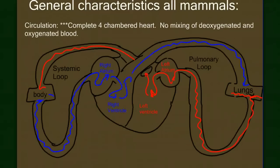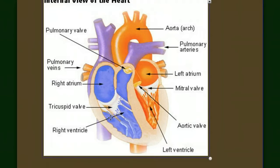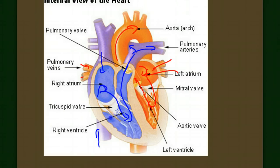Let's look at the circulatory system. With birds, we already had a four-chambered heart, and in fact going back to crocodilians and reptiles, we had a four-chambered heart — and mammals do also. The right atrium receives deoxygenated blood from the body and pumps it into the right ventricle. The right ventricle then pumps blood through the pulmonary arteries to the lungs. Oxygen-rich blood returns from the lungs into the left atrium, then to the left ventricle, which pumps blood out through the systemic loop to the body. We'll talk more about the heart in our circulatory system unit.